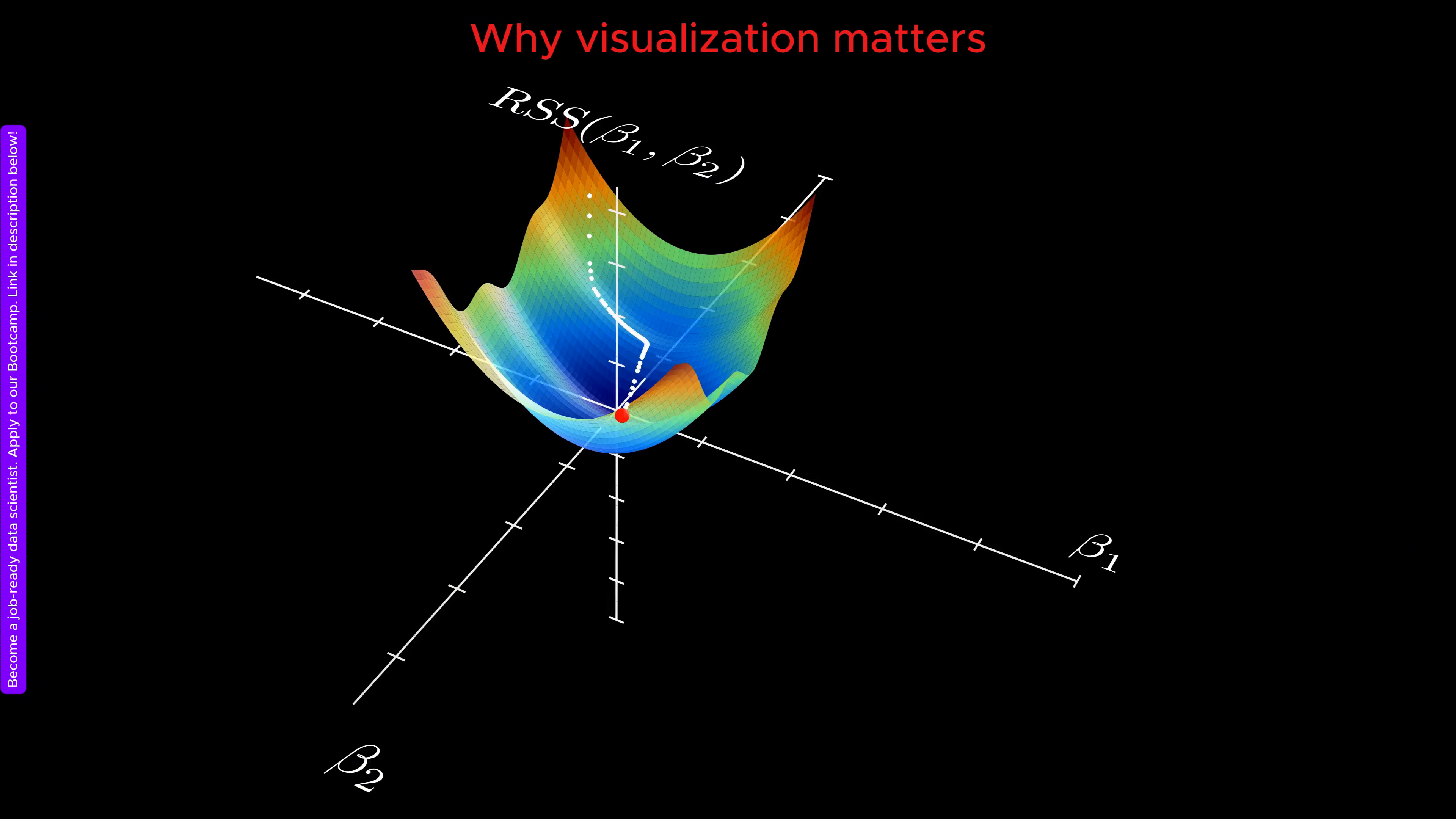Visualization plays a similar role for optimization. Another reason is that loss functions can have many local minima. Gradient descent can easily fall into one of these false minima and get stuck there, even though a much better solution exists elsewhere. If we had a global view of the landscape, we could spot these issues more easily and potentially design strategies to avoid them.